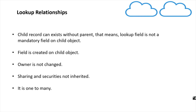Next is lookup relationships. When we want two objects to be independent of each other yet connected, we create a lookup relationship. For example, we have a student object and a teacher object. If we delete the teacher object record, should the student record also get deleted? No — the student can be assigned to a different teacher. So we create a lookup relationship between student and teacher. The relationship field is created on the child object. Owner will not change for the relationship and sharing securities are also not inherited — both objects have their own sharing security and owner. This is a one-to-many relationship: one teacher can be assigned to many students.